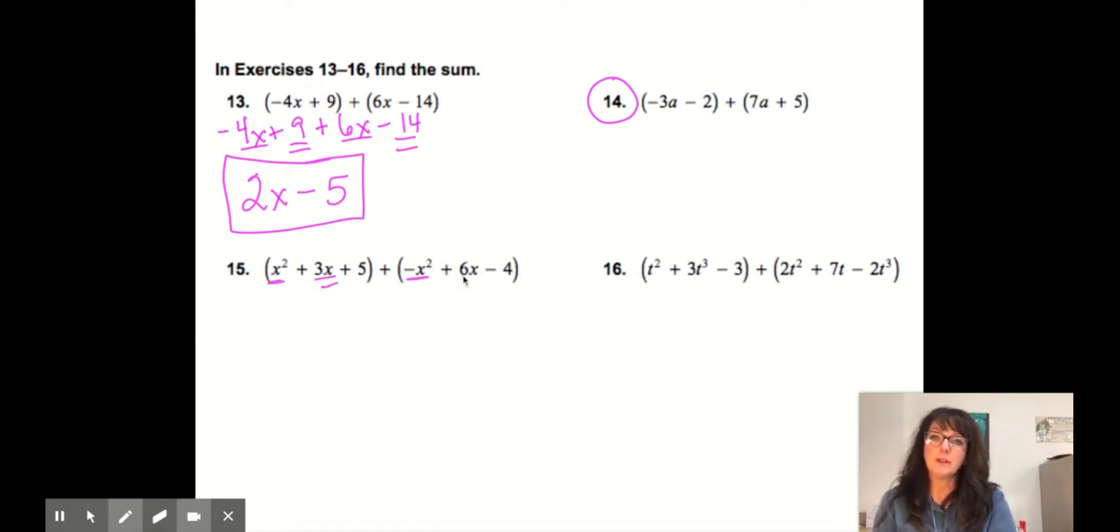Then the next one. And finally, the constant. So these were in order, makes it pretty easy. So 1 plus negative 1 is 0. So the x squared term disappeared. 3x plus 6x is 9x and 5 minus 4 is a positive 1. And 9x plus 1 becomes the simplified term.